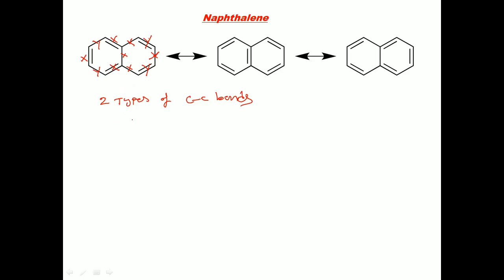What is the relation between X and Y? Which one has a higher bond length? The Y bond has single bond character, while the X bond has double bond character in some structures. Among the three resonant structures, the Y bond has a two-times single bond character. So X is longer than Y.